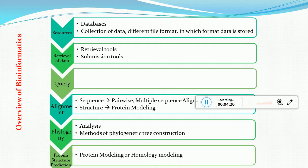This is the overview of bioinformatics. We start from resources, which are databases storing data in different file formats — for example, protein structures are stored in PDB format and sequences are stored in FASTA format. Next is retrieval of data, which involves tools through which we retrieve data or submit data to databases. It is a two-way system: we submit some data and we can retrieve some data from the databases.